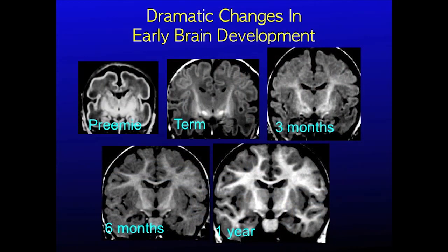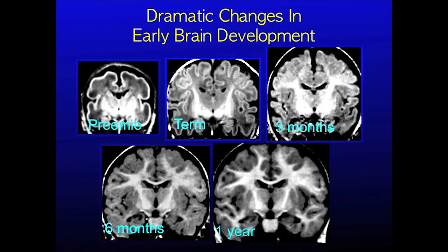Look at these MRI images. Here the babies are facing us and the MRI allows us to see inside the head. During this time period the brain increases more than three times in volume, the neurons develop more than twice the number of connections, and the energy used by the brain also increases by more than twice.